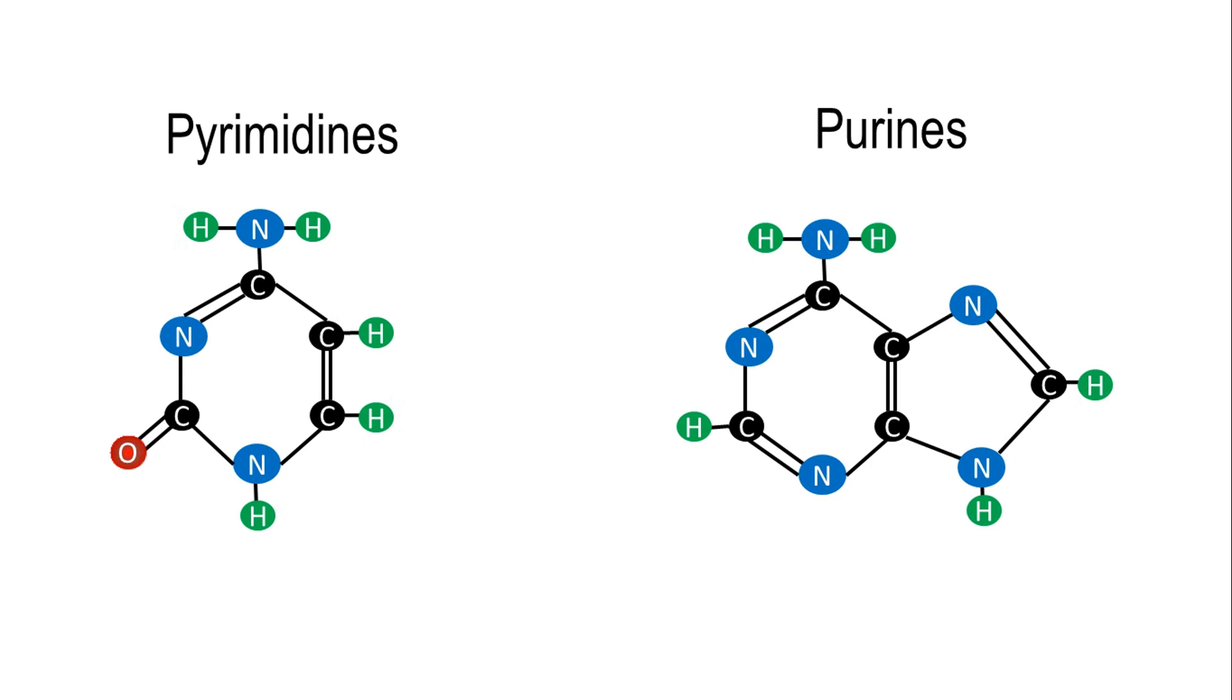The atoms in the pyrimidine ring are numbered from 1 to 6, while in purines they are numbered from 1 to 9.